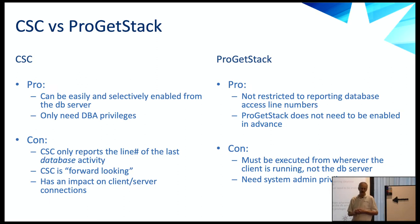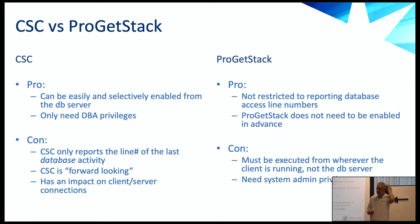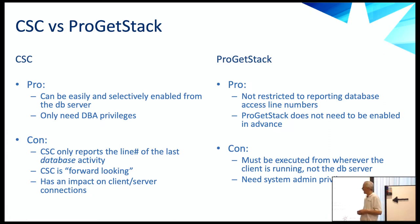Client statement cache is forward-looking — if you haven't enabled it, you can't find out what just happened; you have to enable it first and then the user has to do something. ProGetStack, on the other hand, is immediate — it's whatever's going on right now. There is a client-server impact for the client statement cache because the data has to go back and forth to the database, whereas ProGetStack has no equivalent overhead. What we really like about the client statement cache is that as a DBA you can use it just from the database server without reaching out to touch client machines, giving you insight into what's going on with the database if not the entire application.